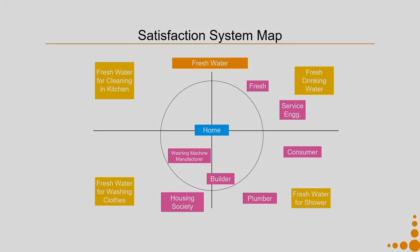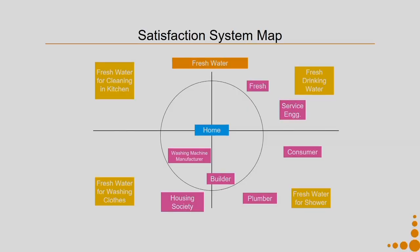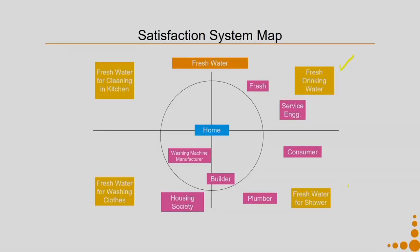Another tool — this can be skipped, but if you bring it into your process, it helps you expand your system design. We started with providing fresh drinking water, but by using the satisfaction system map — which tries to identify what other things you can push your system into with minor modification — you get much greater utilization. It also reaches you to a much larger market segment. For example, fresh drinking water expanded into fresh water for showers, for washing clothes, for cleaning in the kitchen. The satisfaction system map helps you broaden the scope of your system design and reach a much wider target audience.